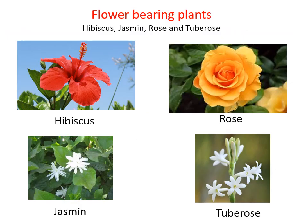You can see here flower-bearing plants, or flowering plants. What is the role of the flower? It is an important organ for reproduction of the plants, because from the flower we get fruit, and in the fruit we get seeds. These seeds germinate and produce new plants — that is the way plants reproduce. Common flowers shown here include hibiscus, rose, jasmine, and tuberose.